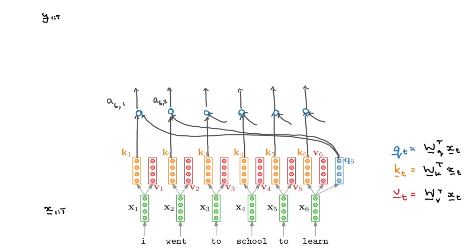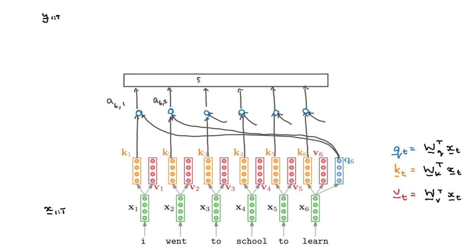We want to scale these so they're between 0 and 1 and sum to 1, which we do using a softmax block. We push all of that through softmax and get out alpha6,1, alpha6,2, alpha6,3, alpha6,4, alpha6,5, and alpha6,6.